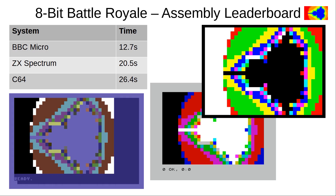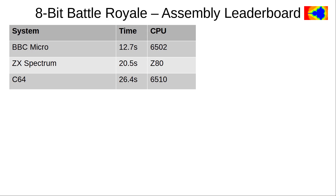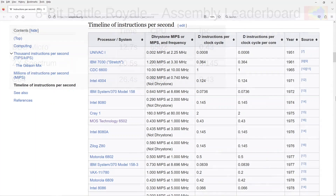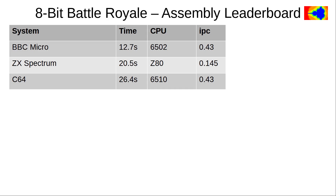Let us try and make some sense of these results by expanding our table with some more information. I've added a column showing the processor type — we see the 6502 and the Z80. For each system, the column IPC shows how many instructions are executed per clock cycle, taken from general Wikipedia values. These numbers can be considered a first measure of efficiency of a CPU design, but the IPC count is blind to how much computational work a single instruction gets done — a parameter that is certainly also important when judging CPU efficiency. The IPC value will also vary with the computational task. Interestingly, we see the 6502s dominating the Z80 by almost a factor of three in this category; the 6502 combines a partially overlapping pipeline with efficient bus access.